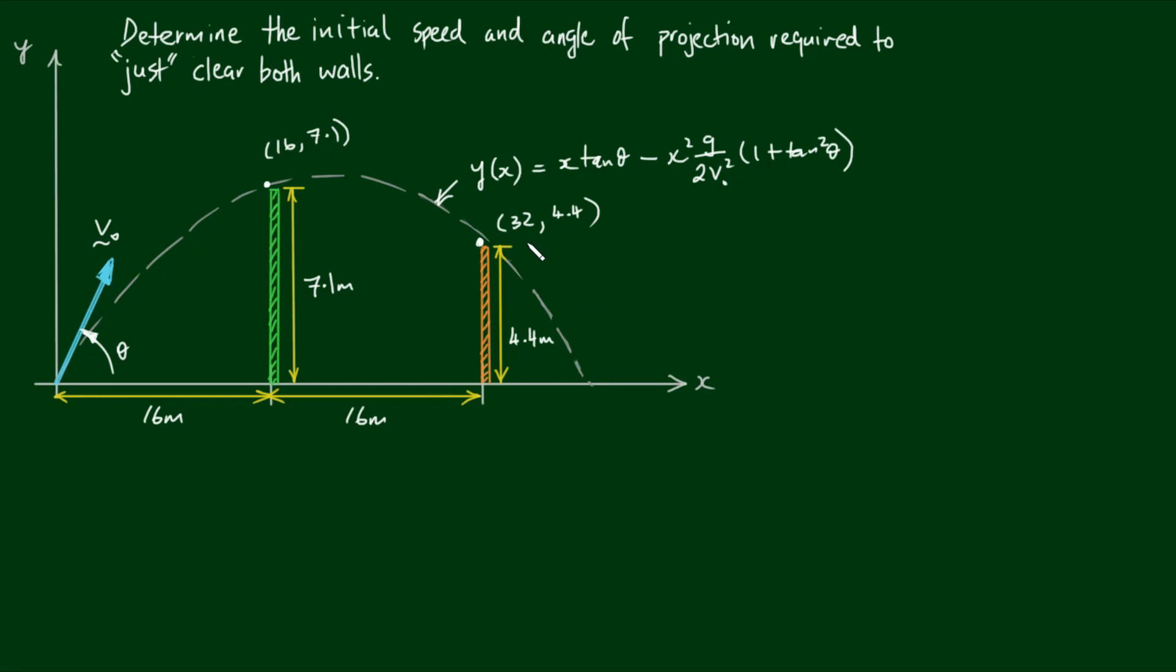Let's work with the furthest wall first. So in step 1, if we substitute the coordinates into the trajectory equation, we've got 4.4 equals 32 tan theta minus 32 squared g divided by 2v0 squared times 1 plus tan squared theta. I'm going to tidy this equation up by substituting tan theta by the letter m.